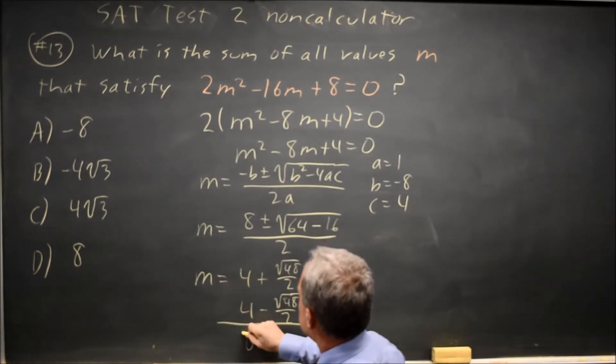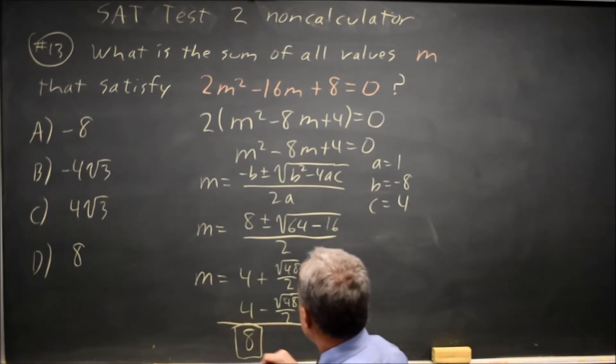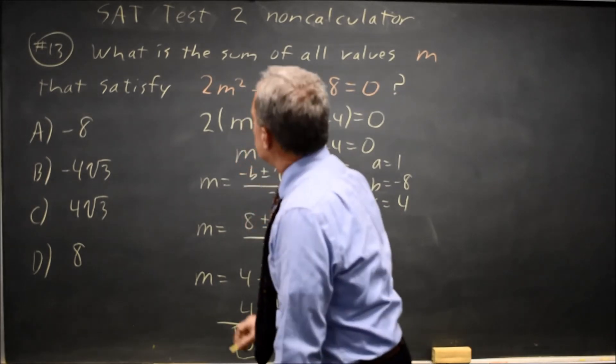If I add these two solutions, 4 plus 4 is 8, root 48 over 2 minus root 48 over 2 is 0, so the sum of the solutions is 8, that would be choice D.